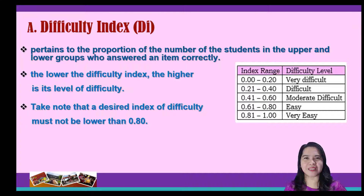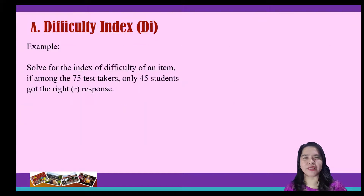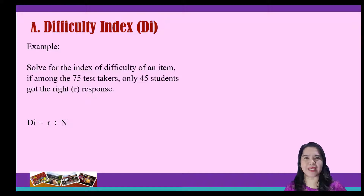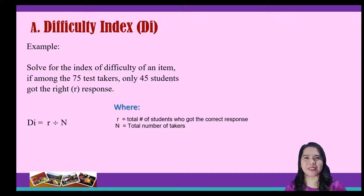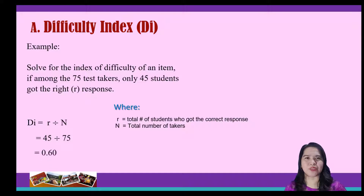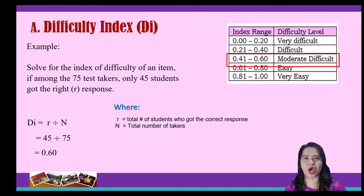Take note that a desired index of difficulty must not be lower than 0.8. For instance, in this problem, we are tasked to solve the difficulty index of an item. To solve this, we have the formula DI equals R divided by N, where R is the total number of students who got the correct response and N is the total number of students who took the test. Substituting the values, we have 45 divided by 75, which is equal to 0.6. Based on our table, the item has a moderate level of difficulty.